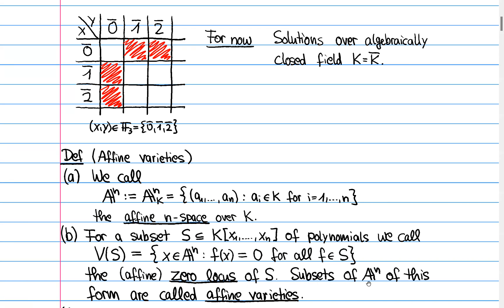And then subsets of A^n which have this form, that there exists some set S of equations which write them as the vanishing set, subsets of this form we call affine varieties. And I should say that other sources sometimes call these things affine algebraic subsets or affine algebraic sets. But we follow here the conventions in the notes of Gathmann and call them affine varieties.